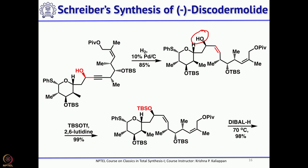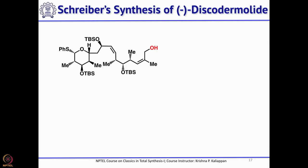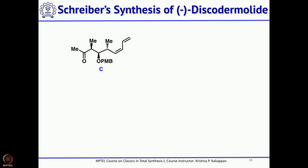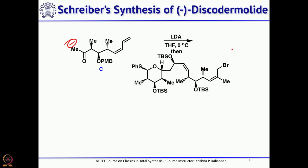Reduction with DIBAL reductively cleaved the pivalate ester to give the primary alcohol. This primary alcohol was converted to the corresponding bromide in two steps via mesylate, followed by treatment with lithium bromide — a Finkelstein reaction — to give the primary bromide. Fragment C was then treated with LDA or lithium hexamethyldisilazide to generate an anion selectively, which was quenched with this bromide in a simple SN2 alkylation.